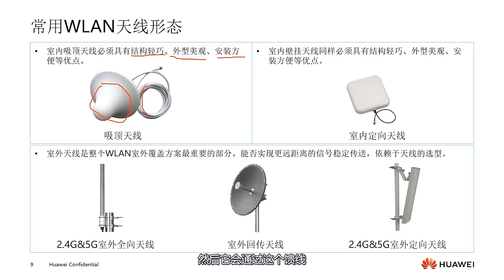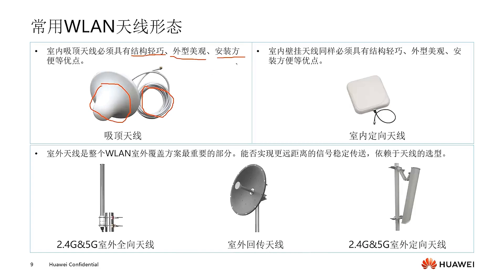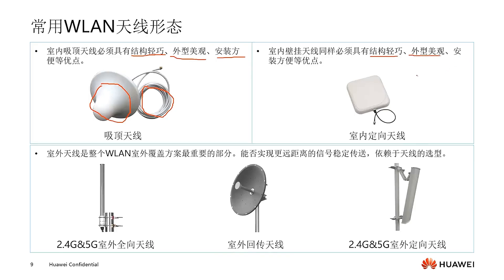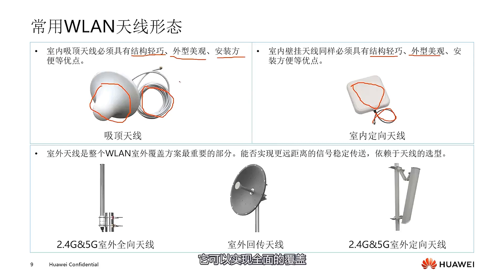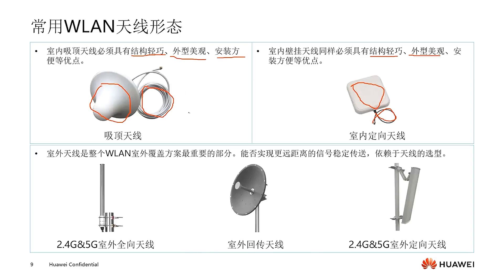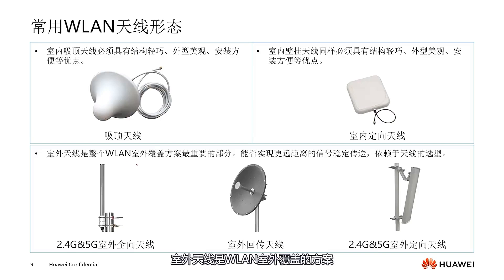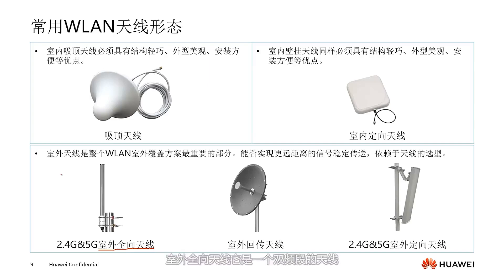Common WLAN antenna types include indoor ceiling antennas, which must be lightweight, aesthetically pleasing, and easy to install. Connected to their signal sources via feeder lines, they are generally used in indoor distribution systems and provide comprehensive coverage. Indoor wall-mounted antennas, also known as indoor directional antennas, are similarly lightweight and easy to install, and they achieve directional coverage. The gain of indoor wall-mounted antennas is somewhat higher than that of ceiling antennas — the concept of gain will be discussed in the next video.